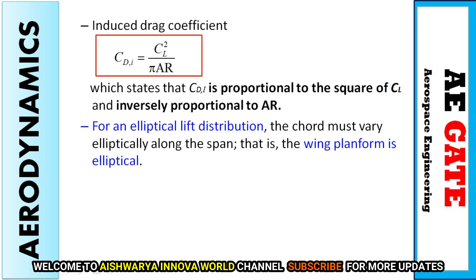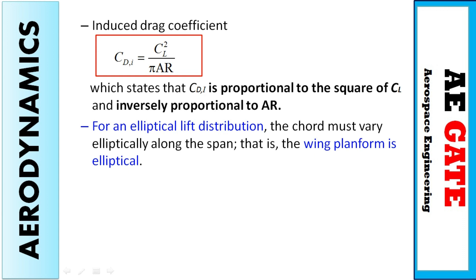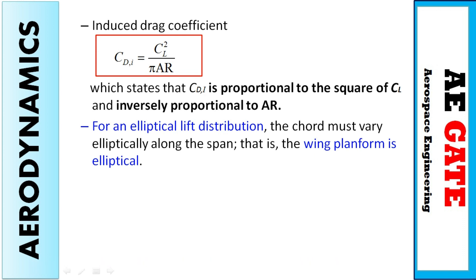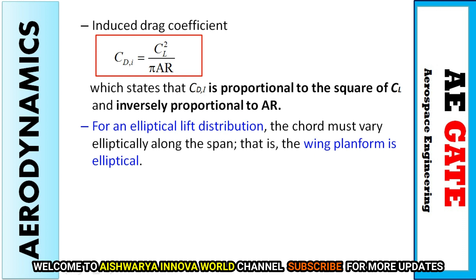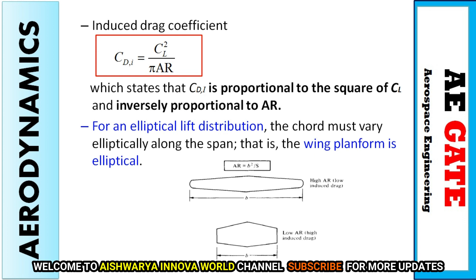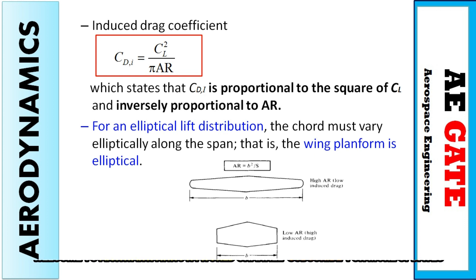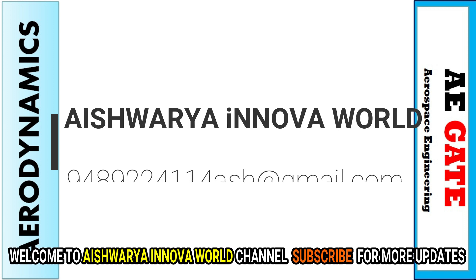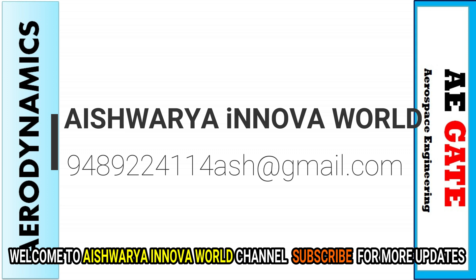For induced drag, we get C_Di = C_L^2 / (pi * AR). This is a very important formula. From this we conclude that C_Di is proportional to C_L squared, and C_Di is inversely proportional to AR — meaning if the aspect ratio is high, the induced drag decreases. To summarize: a high aspect ratio leads to low induced drag, and a low aspect ratio leads to high induced drag. For an elliptical lift distribution, the chord must vary elliptically along the span, and the wing planform is elliptical. I hope this session was useful. Subscribe to my channel for more updates and share this video with your needy fellows. Stay blessed, take care.